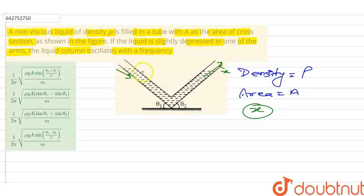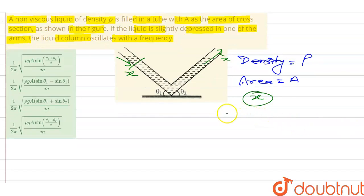The difference in the level, h, is equal to x(sin θ₁ + sin θ₂). This is the difference of the level.